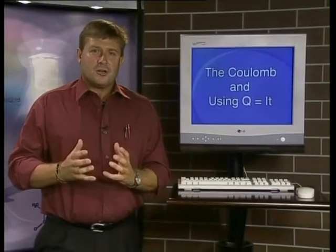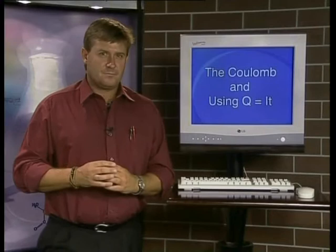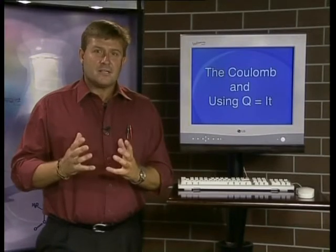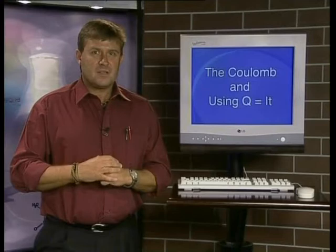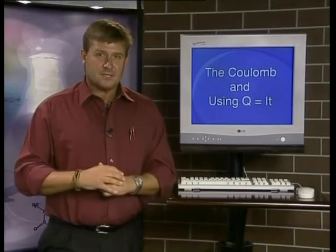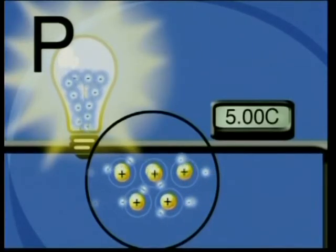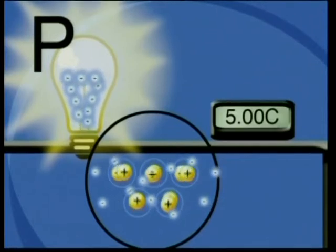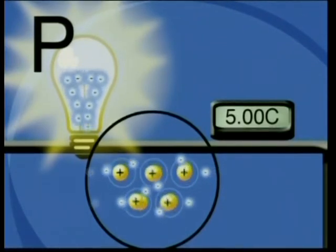We know that q stands for charge and we measure charge in coulombs. We also know that current is the rate of flow of charge. The flow of charge arises due to the movement of electrons between atoms. Electrons are very very small particles, so what we do in physics is take an enormous number of these particles and group them together as one unit. We call this unit a coulomb.